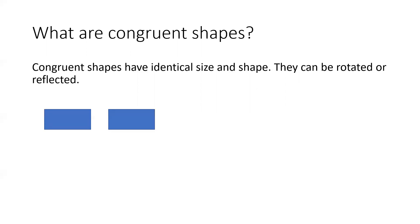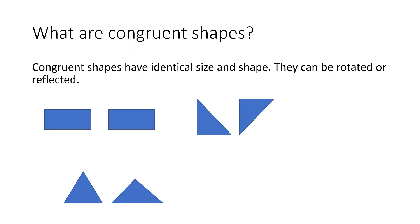These two rectangles are identically sized and exactly the same shape — they are congruent. These triangles, even though they are rotated around, if you put them both the same way up you can see they would be the same shape and they are identically sized, therefore they are congruent. Whereas these two triangles the shape is close but not quite and it's the wrong size, so these are not congruent. And these rectangles, whilst being the same shape, are the wrong size so they are not congruent.